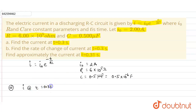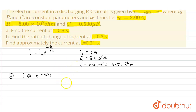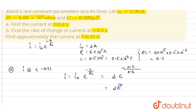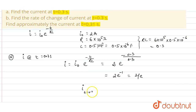In the first part, we calculate current I at T = 0.3 second. Substituting into I = I₀ e^(−T/RC): I₀ = 2, T = 0.3, and RC = 6×10⁵ × 0.5×10⁻⁶ = 0.3. So the exponent becomes −0.3/0.3 = −1, giving I = 2e⁻¹ = 2/e amperes.